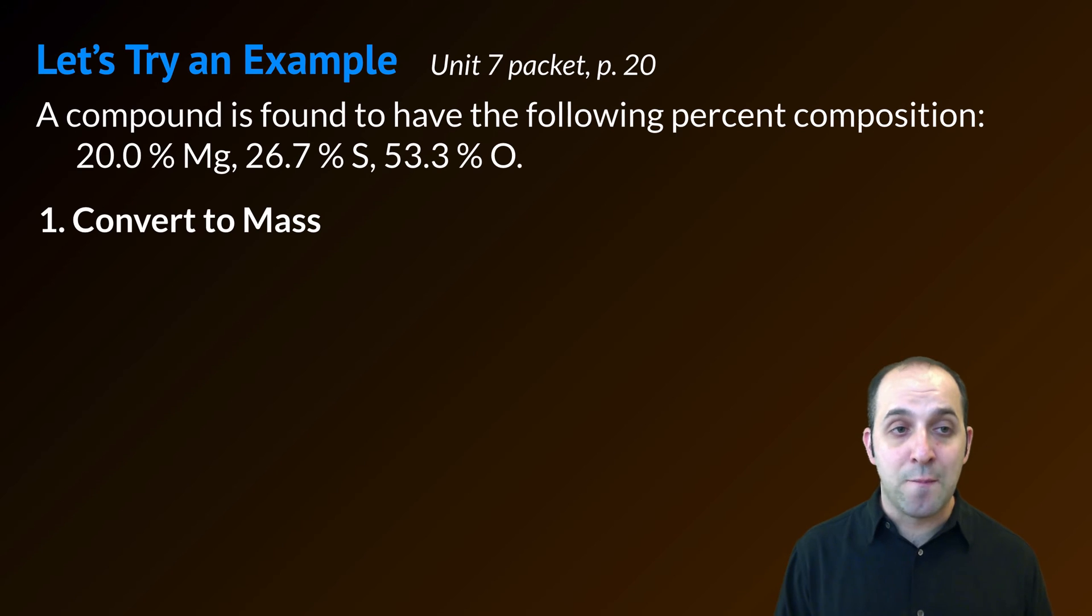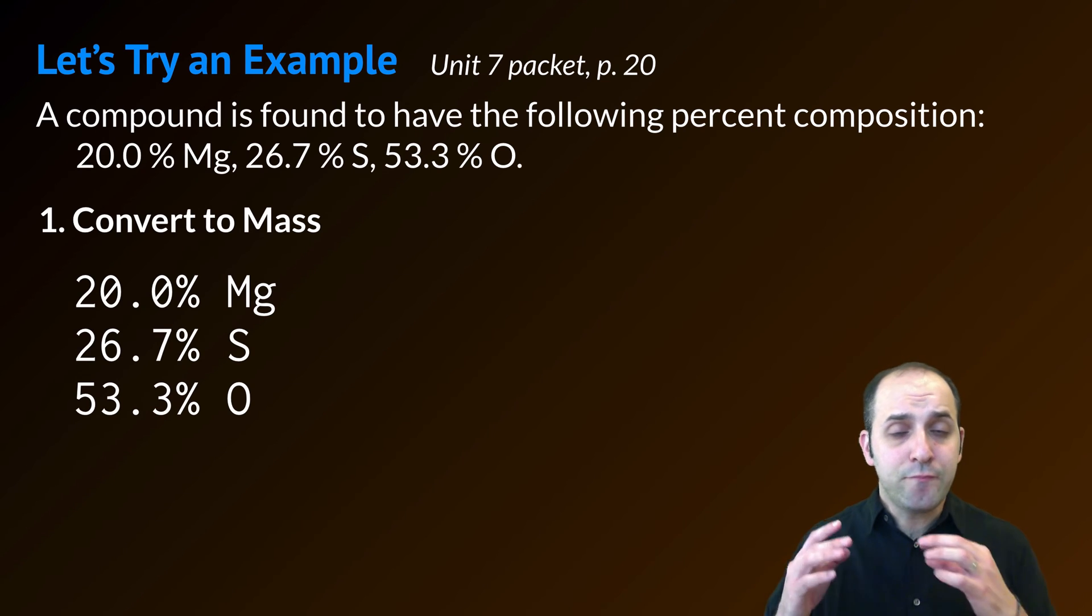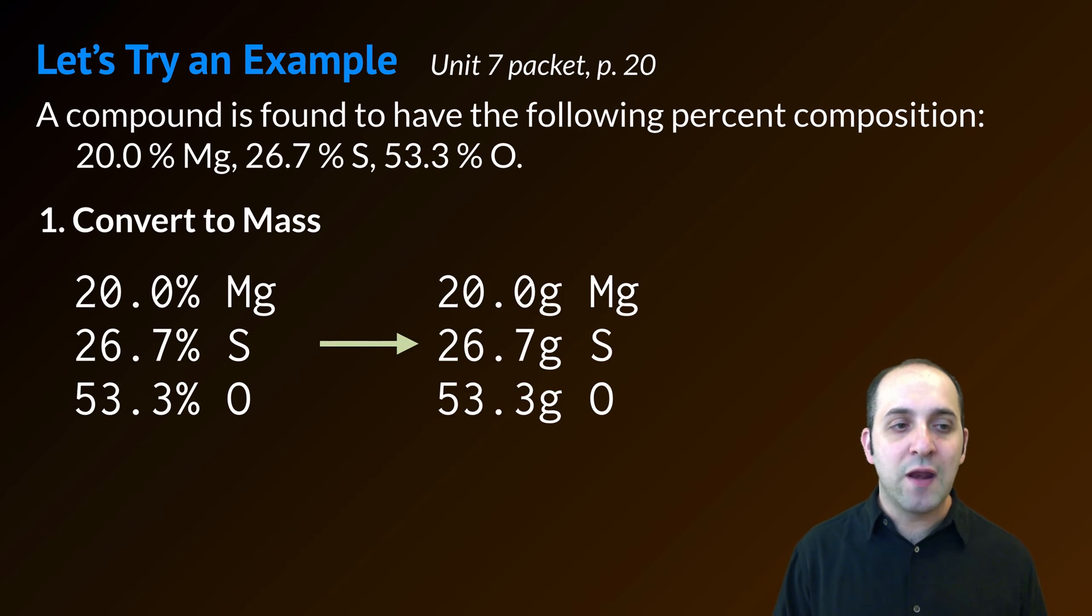So the first thing I need to do is convert to mass. Since I have percentage data, let's just assume I had 100 grams of the substance. If I have 100 grams of the substance, the percent composition data can easily be converted to masses just by turning them into grams. So I'm going to have 20.0 grams of magnesium, 26.7 grams of sulfur, and 53.3 grams of oxygen.